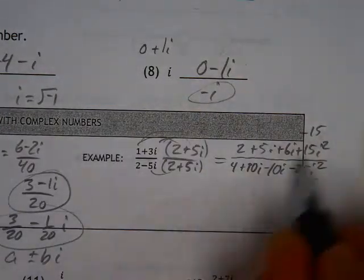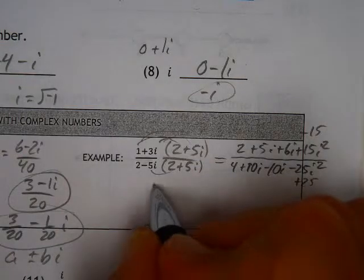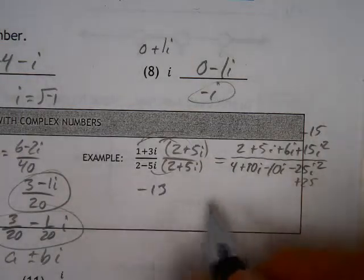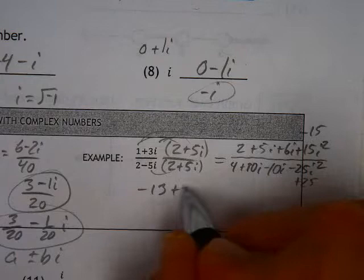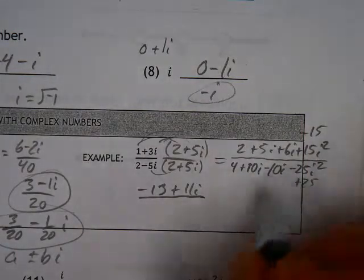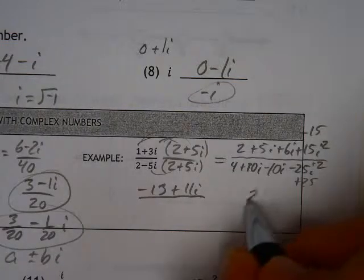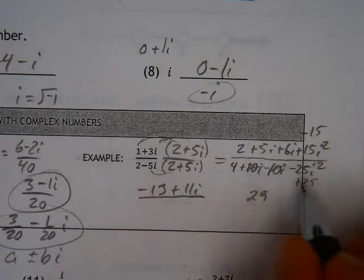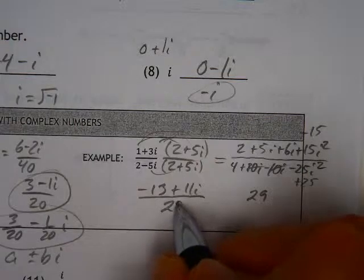So, we clean that up a little bit. The 2 and the 15 become 13, a negative 13. The 5i and the 6i become 11i. And on the bottom, you've got your 4 and your 25, which is 29. And these things go away, so all you have is a 29.